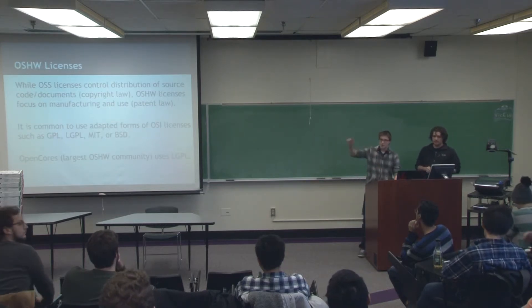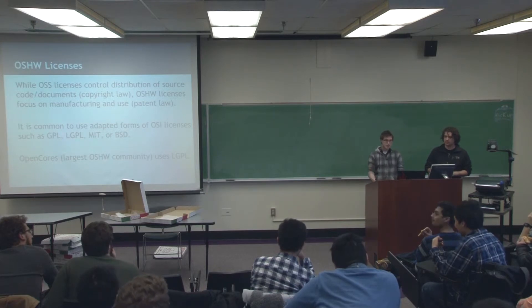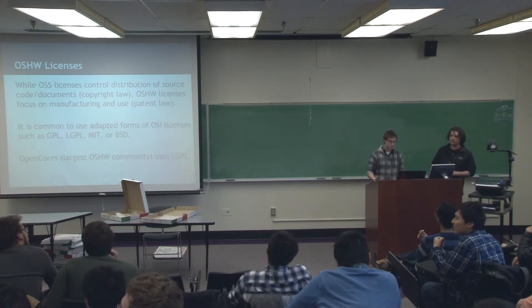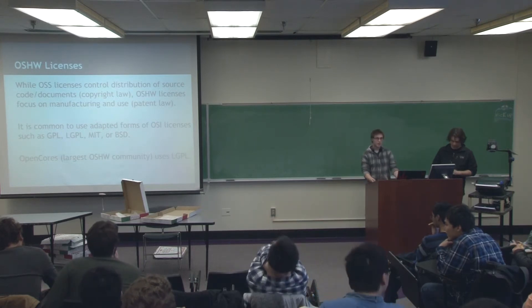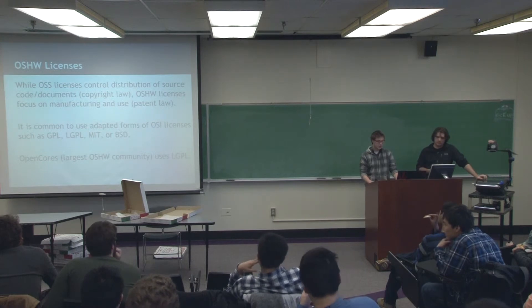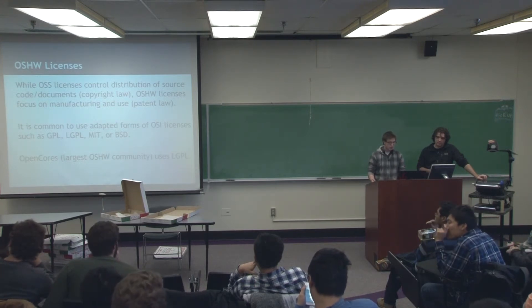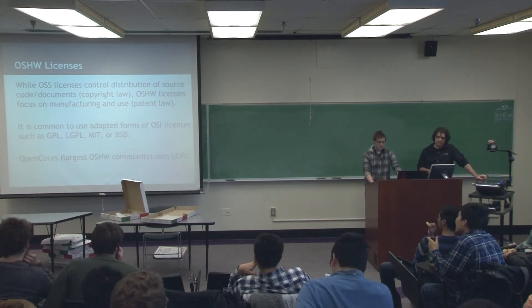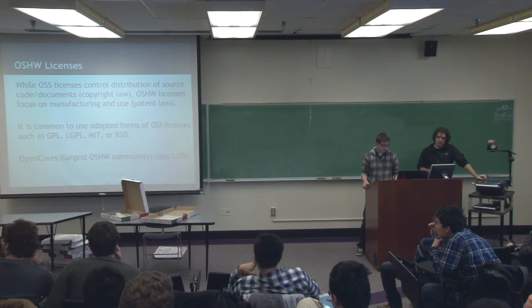One last thing before we go to open business models: regarding actual specific licenses for open hardware — OSI hasn't approved a single open hardware license. Every license basically used in open hardware projects is derivative of open software licenses that Colin was talking about. For example, OpenCores uses LGPL. You can use a modified BSD license with a few more clauses added on. There aren't any open hardware licenses per se, so people use modified open source software licenses.